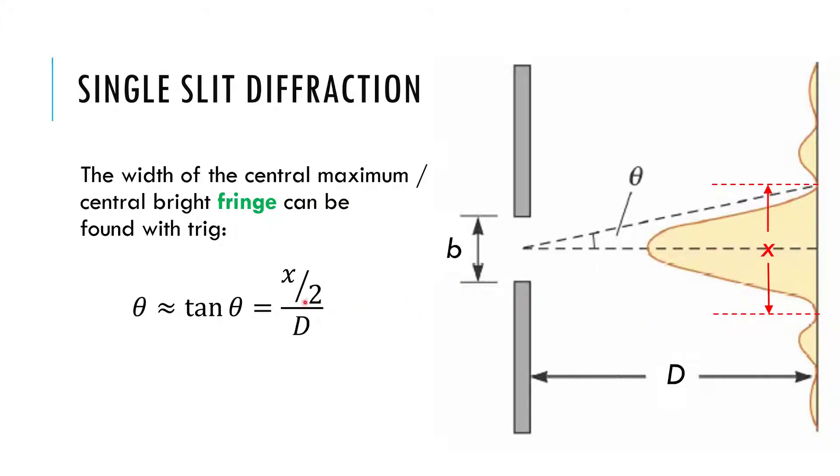And so I can solve for the width of the, sorry, the width of this bright spot just by substituting in, solving for X here. And so the width of that bright spot should be twice the distance to the screen times the angle in radians.